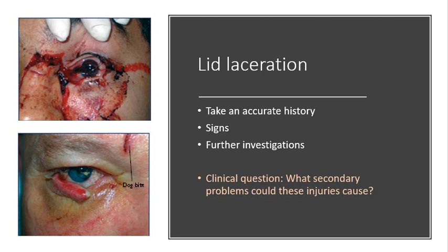And that's where the dog has bitten the patient on the face. And there's the lower canaliculus, which is actually out of position. And so, the clinical question is: what secondary problems could an injury like this cause? I want you to think about — if the lower canaliculus is not in position and the eyelid is affected in the way shown in the lower image — what sort of problems is this patient going to have?